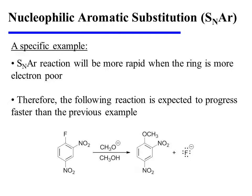It's worth noting that the SNAr reaction will be more rapid when the ring is more electron-poor. Therefore, the following reaction is expected to progress more rapidly than the previous example. Notice that in this reaction, a second nitro group resides on the substrate. Therefore, we expect the negative charge of the Meisenheimer complex to be further stabilized by this additional electron-withdrawing group. In fact, it leads to even more resonance structures for the Meisenheimer complex. So the SNAr product is exactly what we would expect — the methoxy group has replaced the fluoride — but this reaction will be quicker than the one we looked at previously.